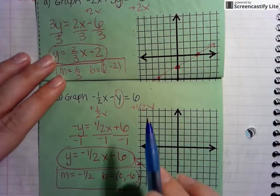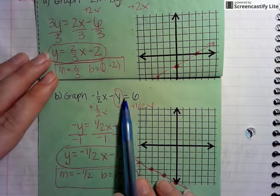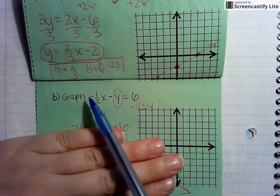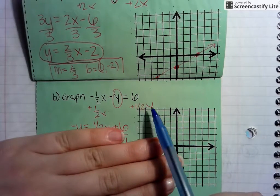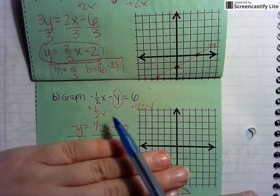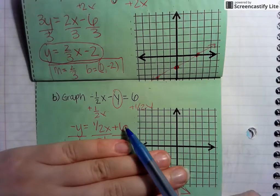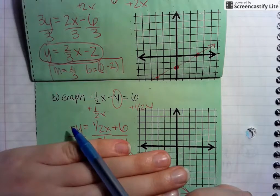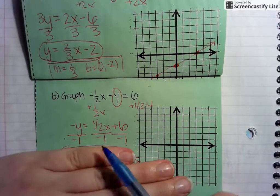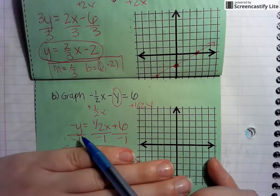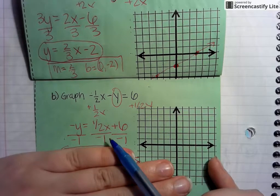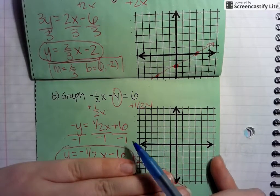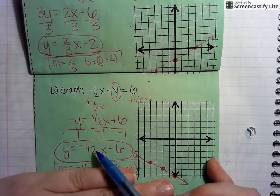For the last example, I want to get it into y equals mx plus b, so I'm going to get y by itself. I'm going to add 1/2 x to both sides, because this is a negative 1/2 x. I can't combine these together, so I get negative y equals 1/2 x plus 6. This is really saying negative 1y, so I'm going to divide all terms by negative 1. That cancels to just y, and 1/2 divided by negative 1 gives me negative 1/2. Then positive 6 divided by negative 1 gives me negative 6. My slope is going to be negative 1/2 — my m value.